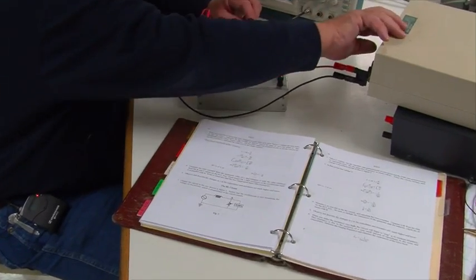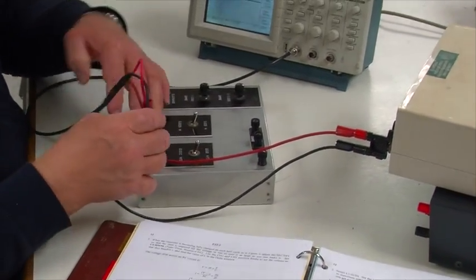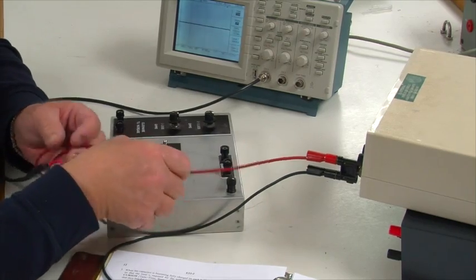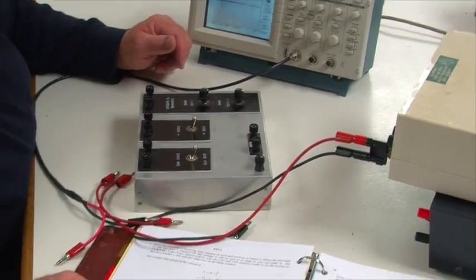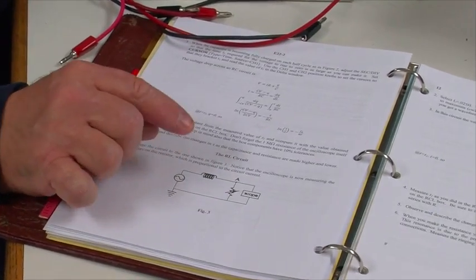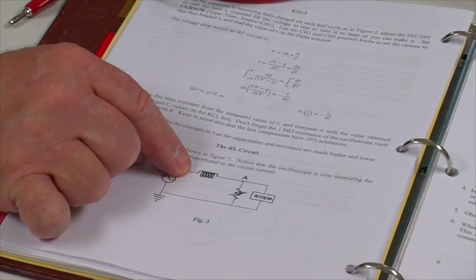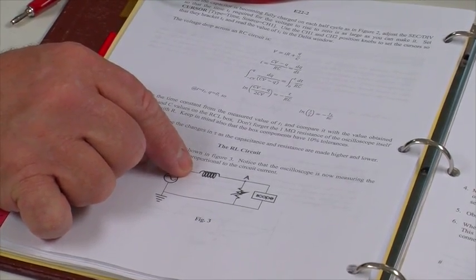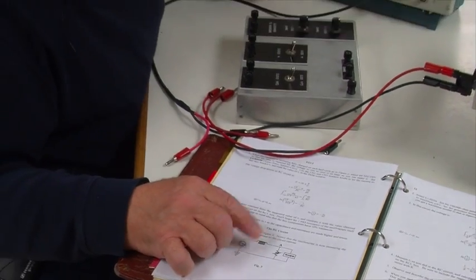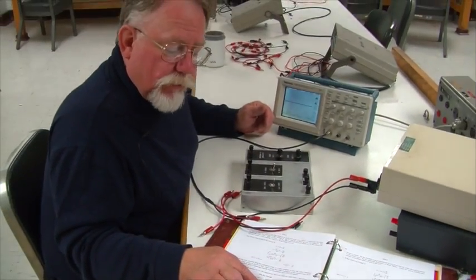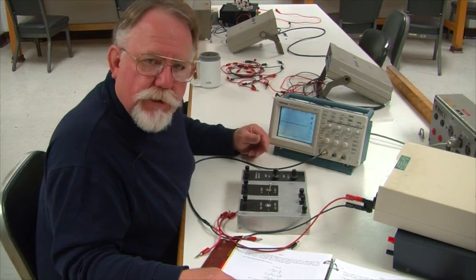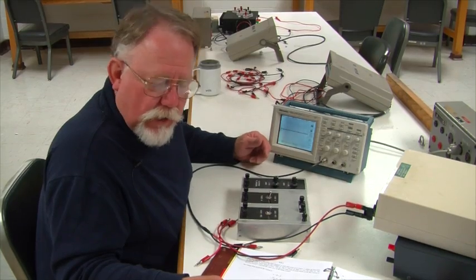Now the second part involves an LR circuit. Now, for an inductive circuit, we want to measure current rather than voltage, because the voltage across an inductor does not look like the current. It looks like the derivative of the current. And so, in order to get something that looks like current, we're going to need to measure the voltage across the resistance. Because resistor voltage is I times R, so we see something that has the same phase as current.